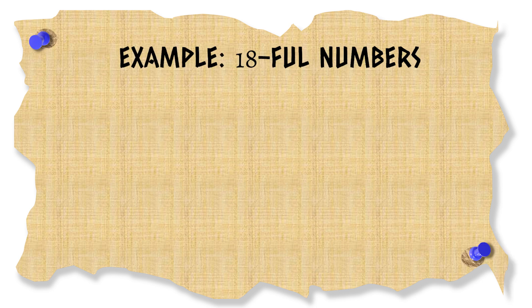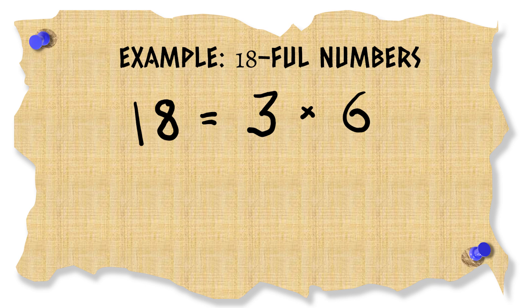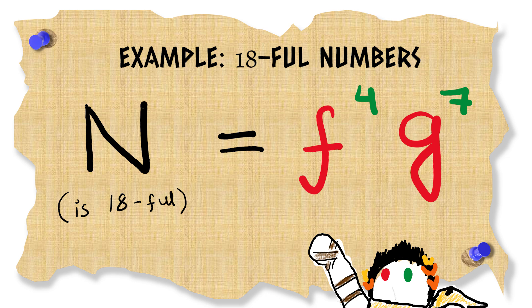Let's close this out with an example. Given an 18 full number, I first factorize 18 to get 3 times 6 and so a is 4 and b is 7. Which means any 18 full number can be written as f to the 4th times g to the 7th.